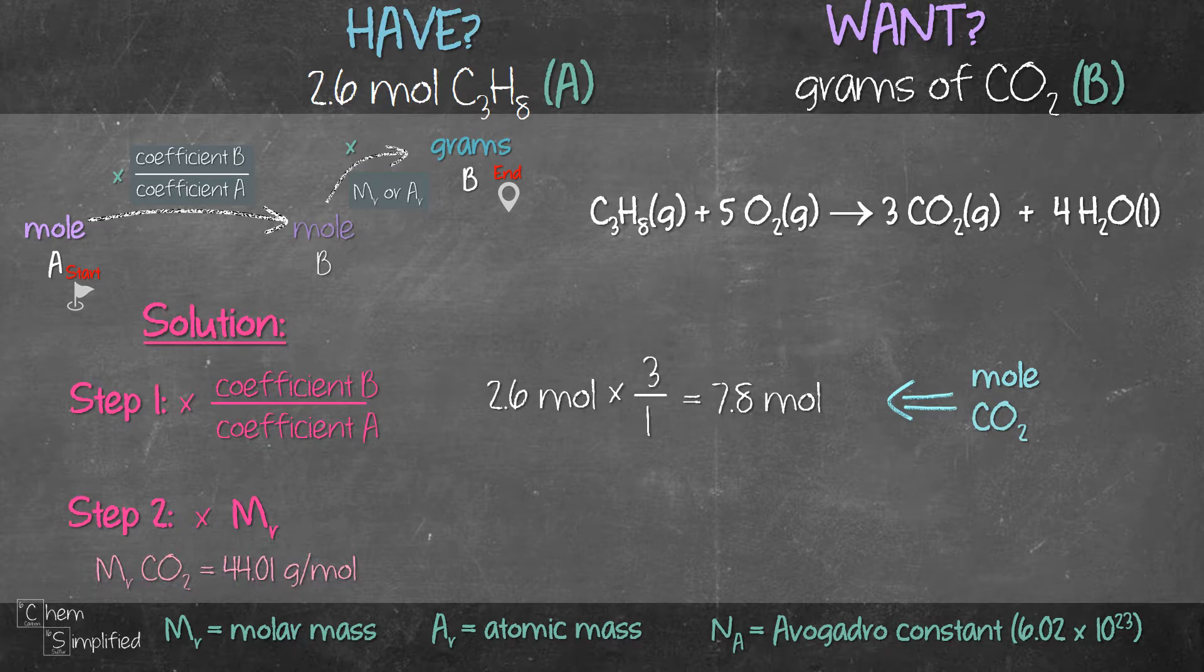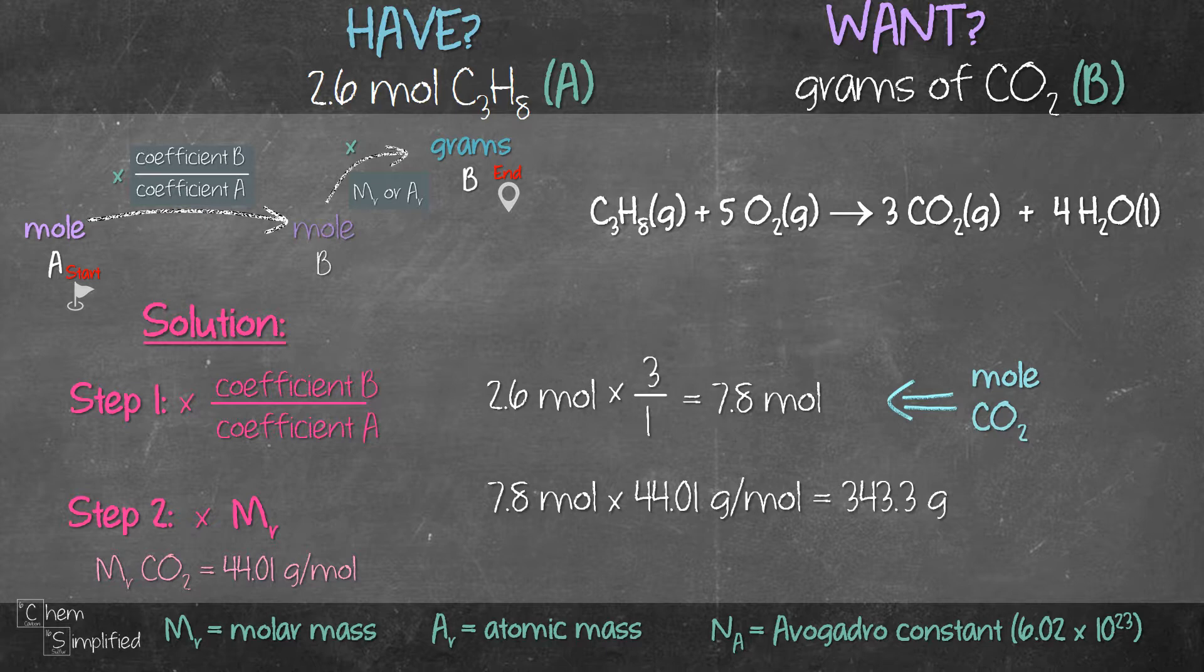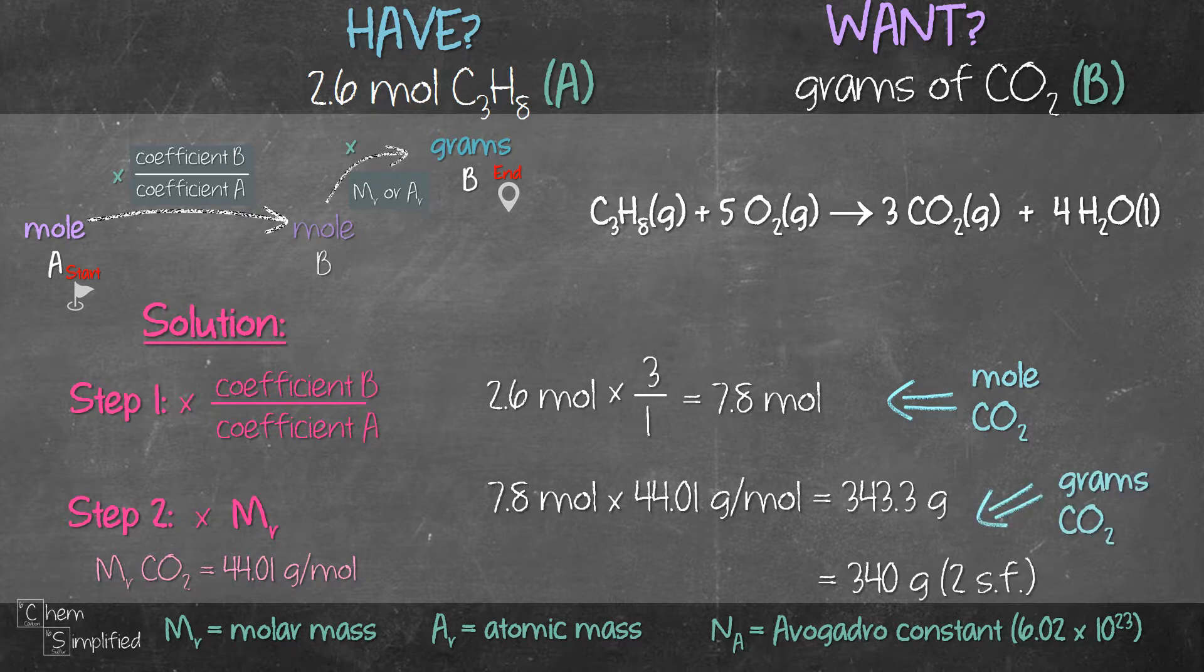So we take 7.8 and we multiply with 44.01 and we get 343.3 grams or 340 grams if we need to report it in two significant figures. That's the gram of CO2, which is what the question wants us to find.